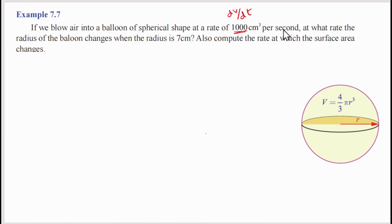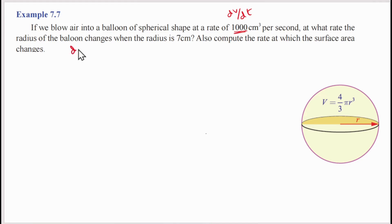At what rate does the radius of the balloon change? We need to find dr/dt. We will use the given value r = 7 cm and compute dr/dt.